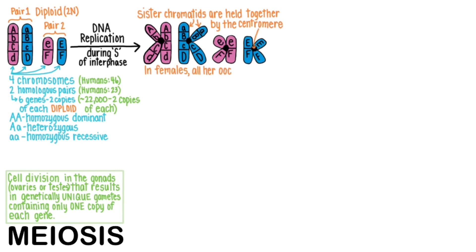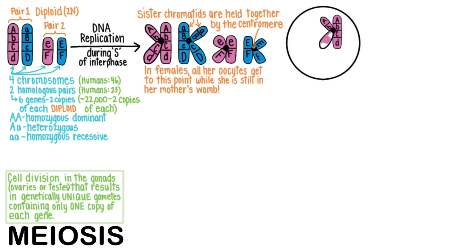In females, all of her oocytes get to this point while she is still in her mother's womb. I'm just speculating, but I think this happens because it gets all the eggs' DNA replicated while they are young and fresh and haven't yet accumulated mutations that might increase their mistake rate during replication. Then they pause at this point of prophase 1 of meiosis 1 until the girl reaches puberty, after which meiosis happens every month when one egg gets to completely mature and be ovulated.